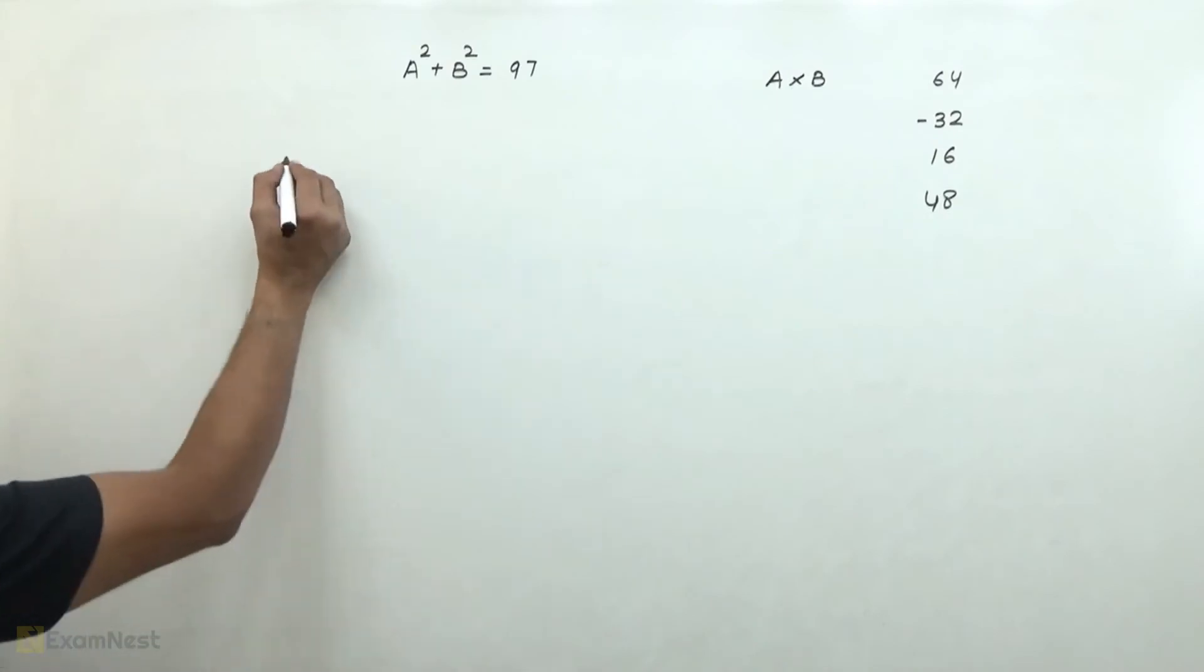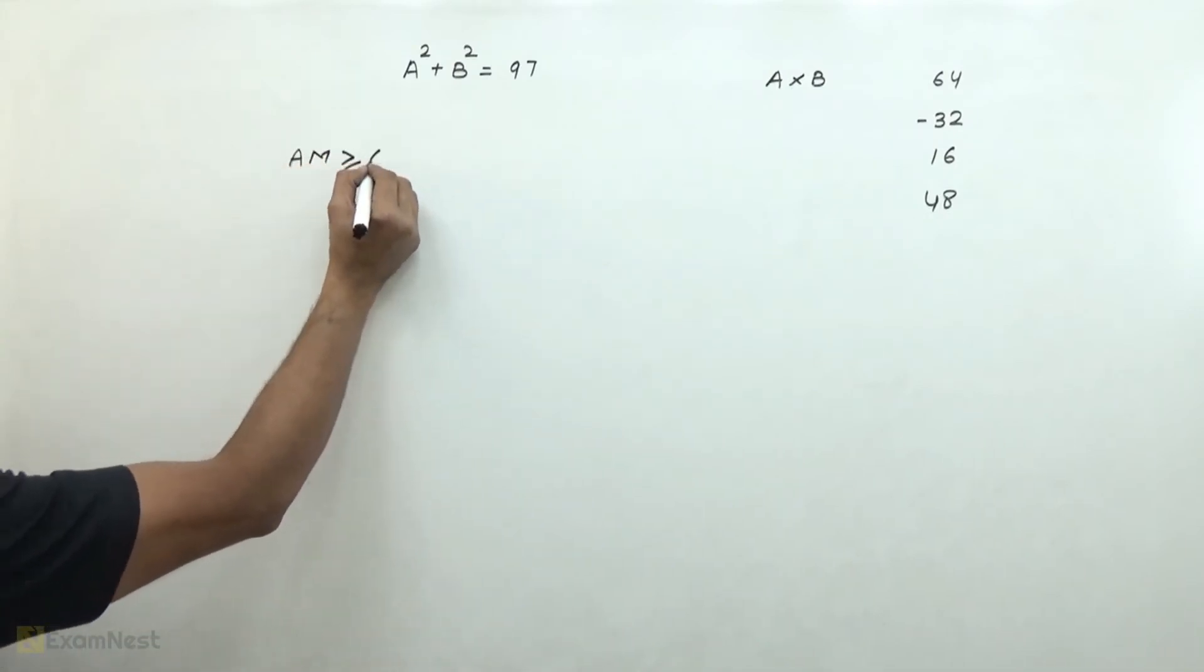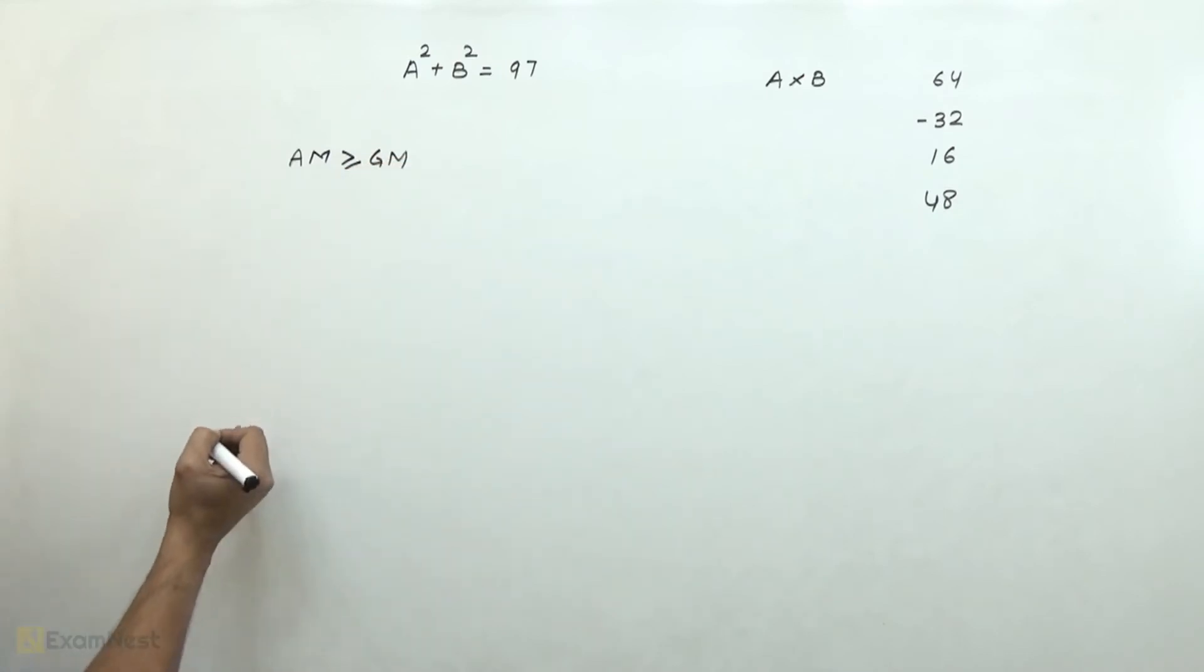We know that arithmetic mean is greater than or equal to geometric mean. If we have two numbers given here,